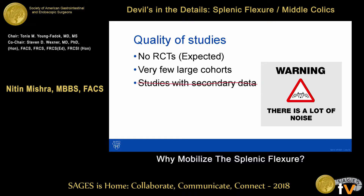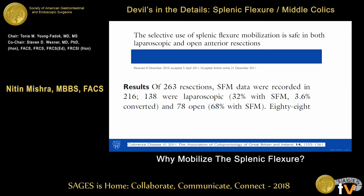There is a lot of noise in the literature, so you have to be careful about looking at an abstract and making an opinion. To highlight this: one article claims that selective splenic flexure mobilization is safe in both lap and open surgery — but the number of patients who actually had splenic flexure mobilization was only 47, subdivided into two groups, meaning a maximum of 24 per group. You cannot make meaningful conclusions from an article like that. You have to be careful.